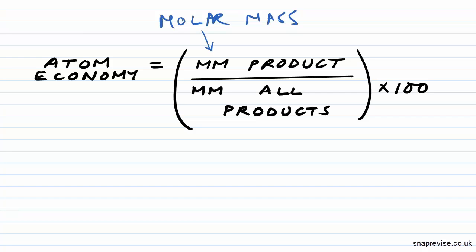So if we had A plus B and it went to form C plus D, say C was our desired product, to work out the atom economy we would do: atom economy equals the molar mass of C divided by the molar mass of the whole product, which is C plus D, multiply that by 100.